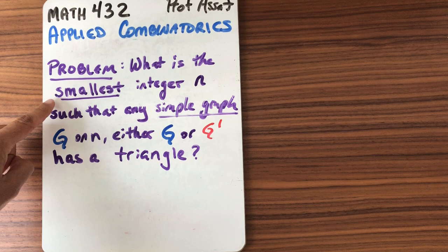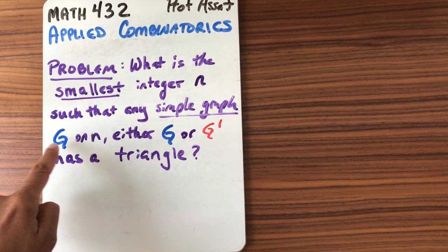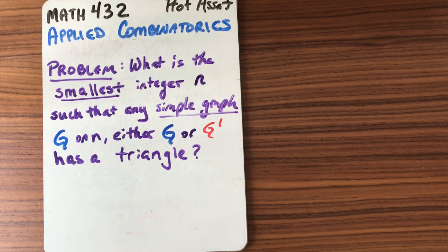The problem that's going to motivate the next week of lectures is the following: What is the smallest integer n such that any simple graph g with n vertices, either g or its complement, has a triangle?